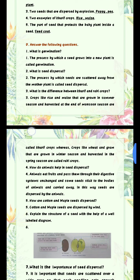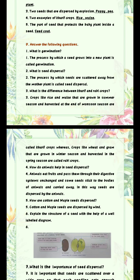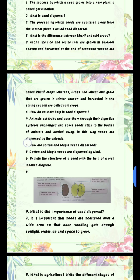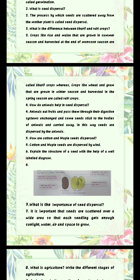Question 3: What is the difference between Kharif and Rabi crops? Answer: Crops like rice and maize that are grown in summer season and harvested at the end of monsoon season are called Kharif crops. Whereas crops like wheat and gram that are grown in winter season and harvested in the spring season are called Rabi crops.